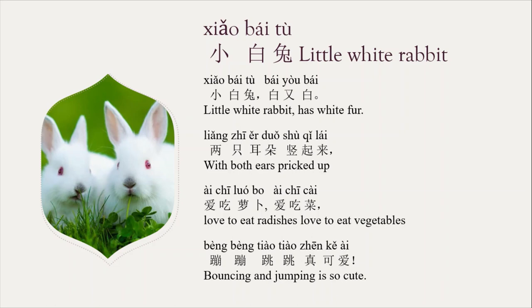The first sentence: 小白兔，白又白。小 means 'little,' 白 is the color white, 兔 means rabbit. 白又白 literally means 'white and white,' which translated into English means 'so very white.'